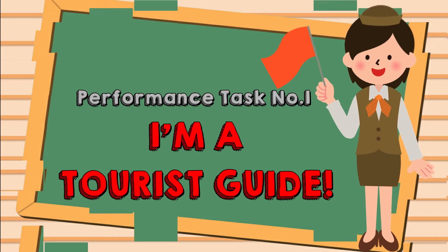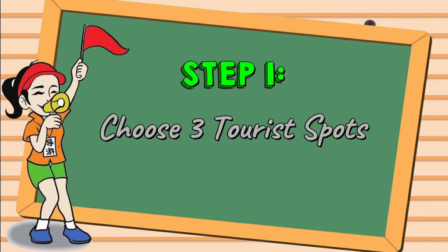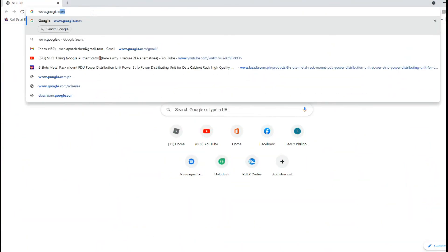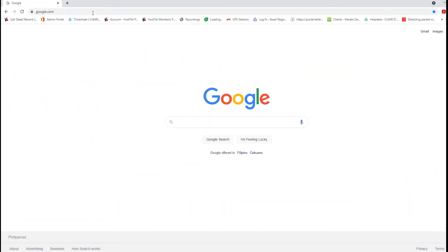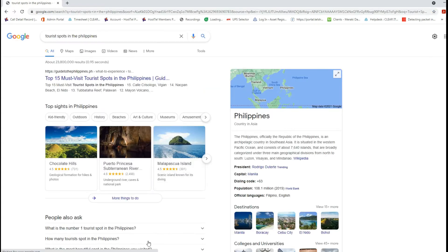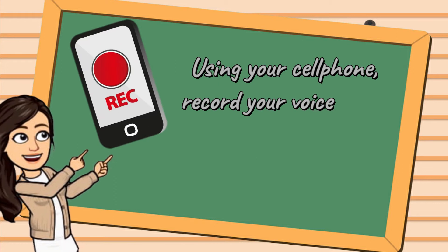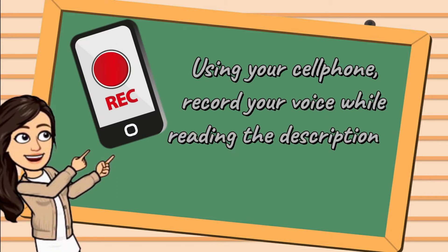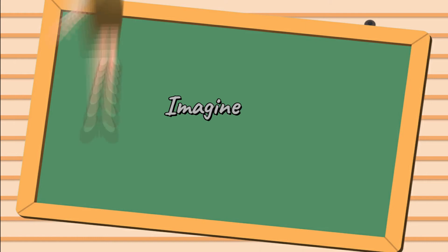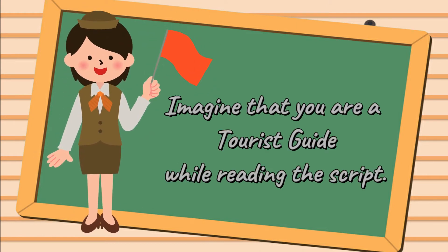Follow these steps. Step 1: Choose 3 tourist spots in the Philippines. Type 'tourist spots in the Philippines' in www.google.com or any search engine. Using your cell phone, record your voice while reading the description of the tourist spots you have chosen. Imagine that you are a tourist guide while reading the script.